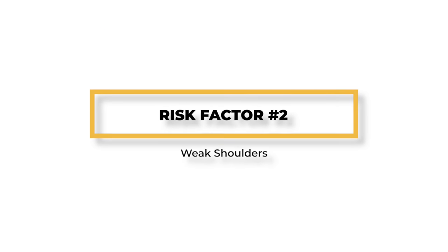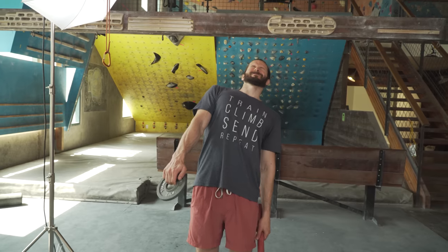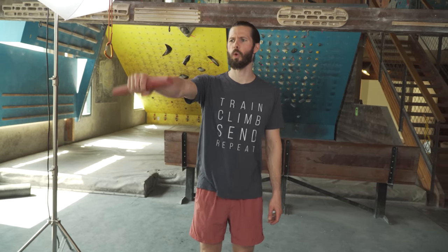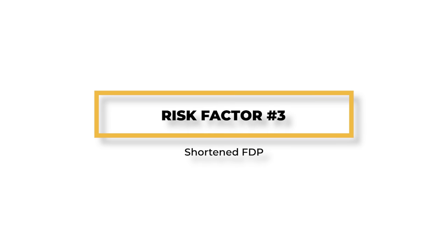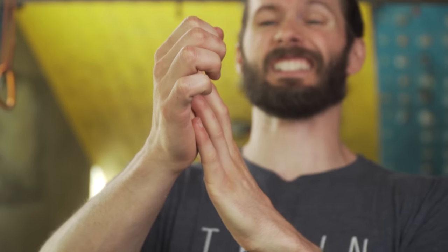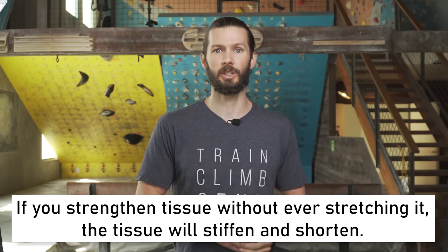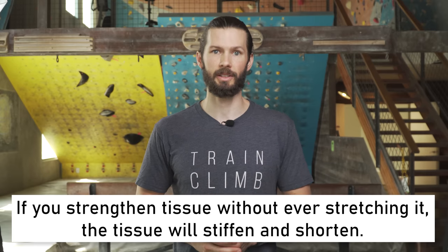Lack of strength in the shoulders is an additional internal risk factor. If you have weakness in your shoulders, you'll become more dependent on your forearms. This will place added strain or stress repetitively to the FDP, which can produce an injury. Also, shortening of the FDP can make it more prone to injury as it is less able to handle rapid lengthening of the muscle body and or tendon and is typically weaker in a lengthened position. Commonly, due to a combination of strengthening the tissue without stretching or lengthening the tissue, the shortened tissue can produce injuries when combined with some external factors.